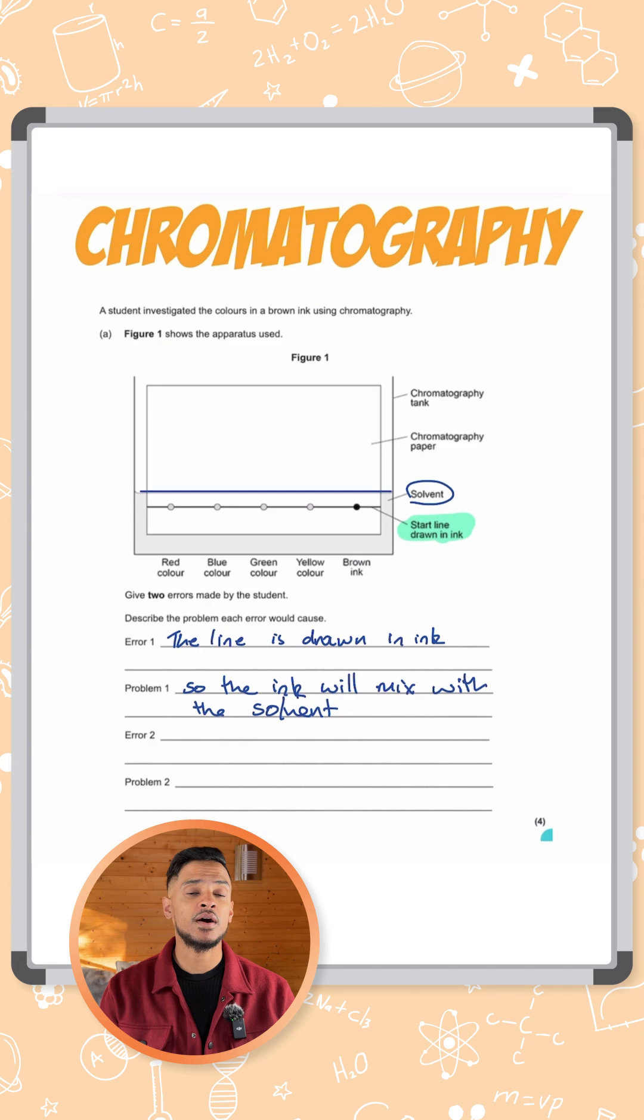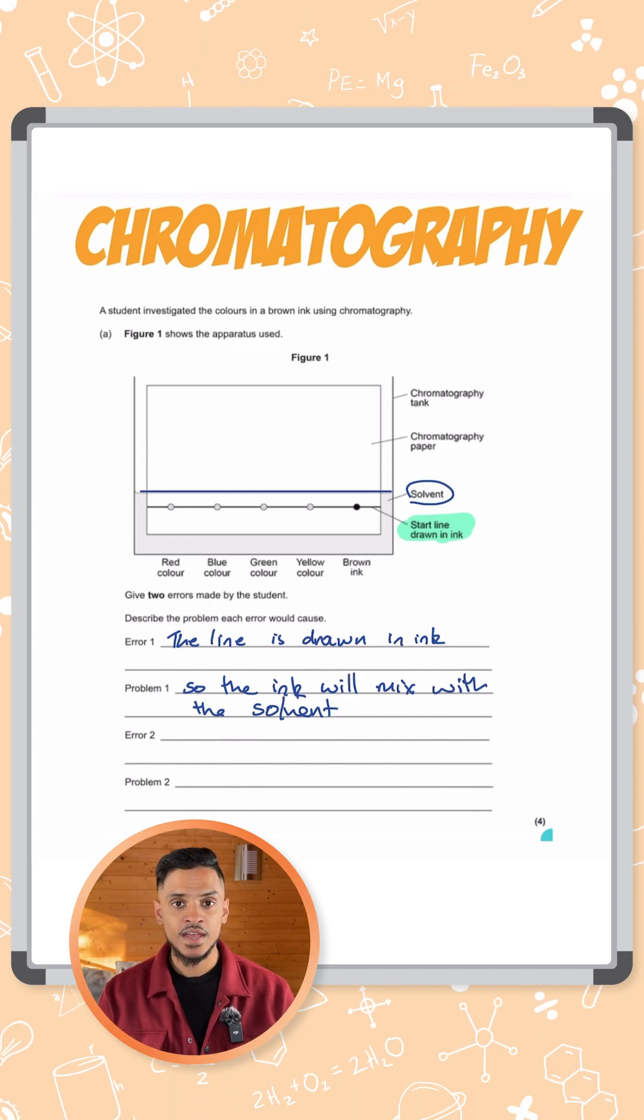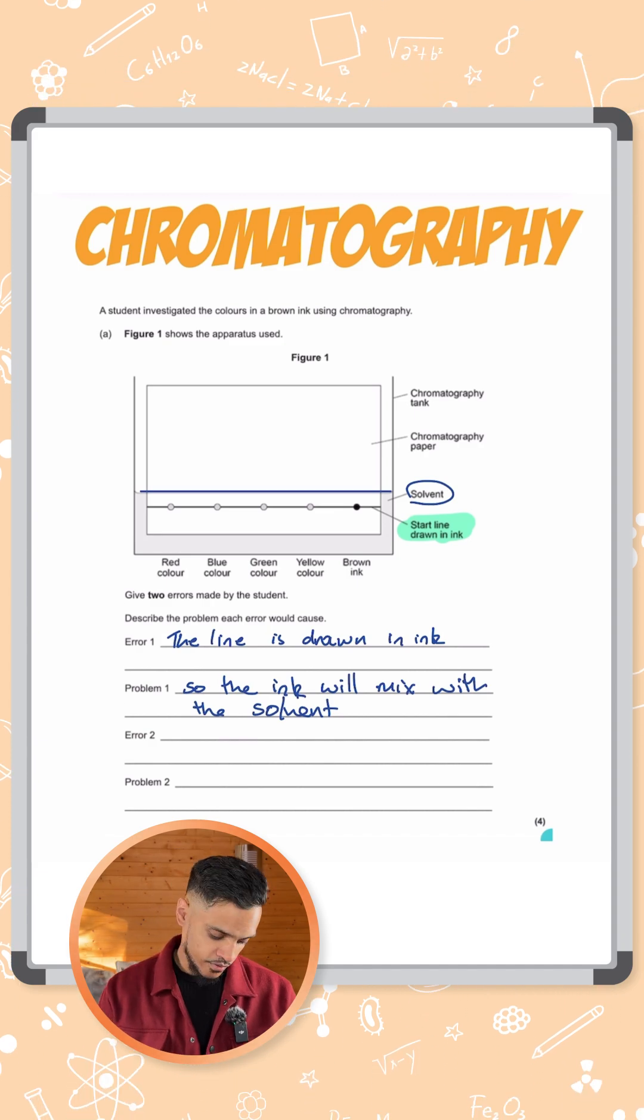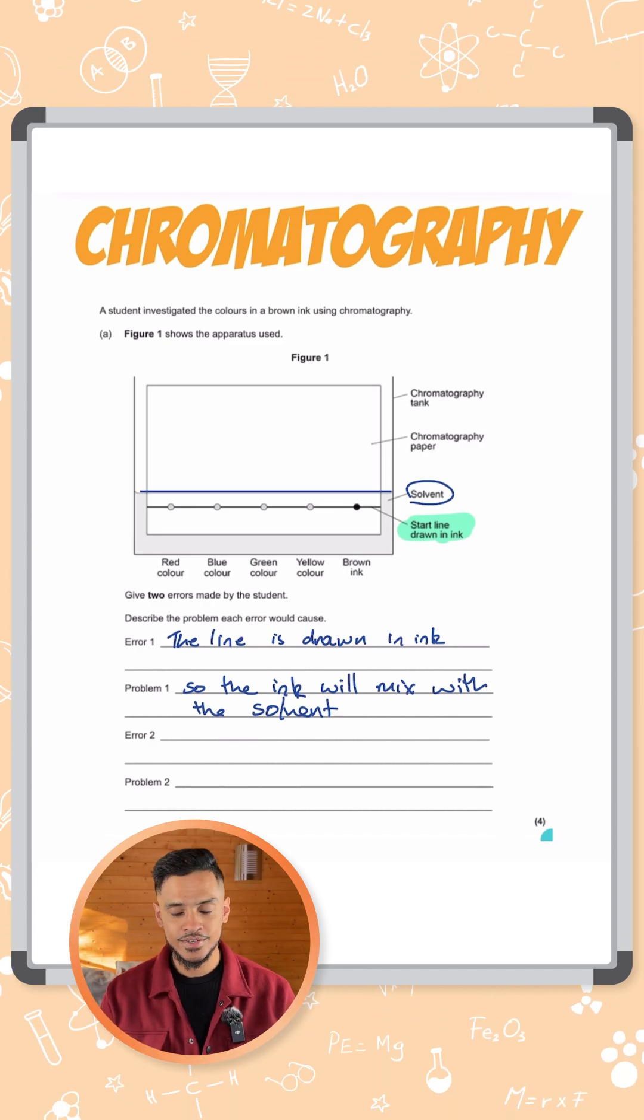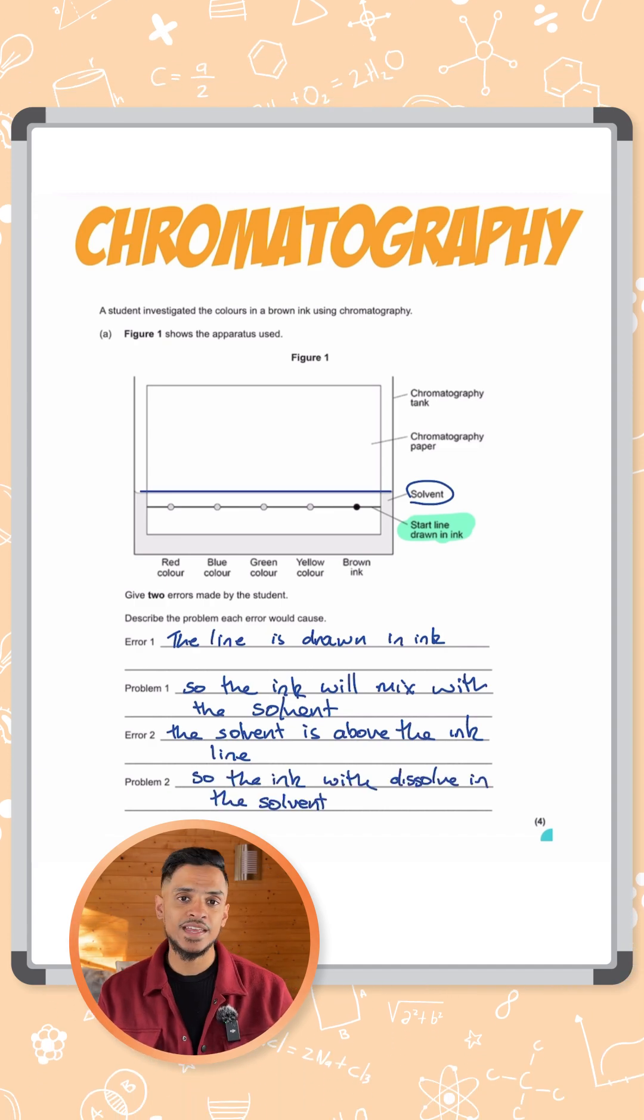Here because the solvent is above the inks, it means the inks are going to dissolve in the solvent and you're not going to get this effect of all the components separating out on the paper. So for the last two marks you just need to mention the solvent is above the ink line so the ink will dissolve in the solvent.